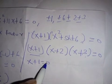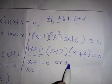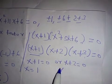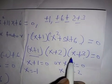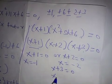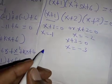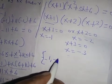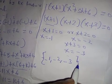So either x plus one equals zero, meaning x equals negative one; or x plus two equals zero, meaning x equals negative two; or x plus three equals zero, meaning x equals negative three.